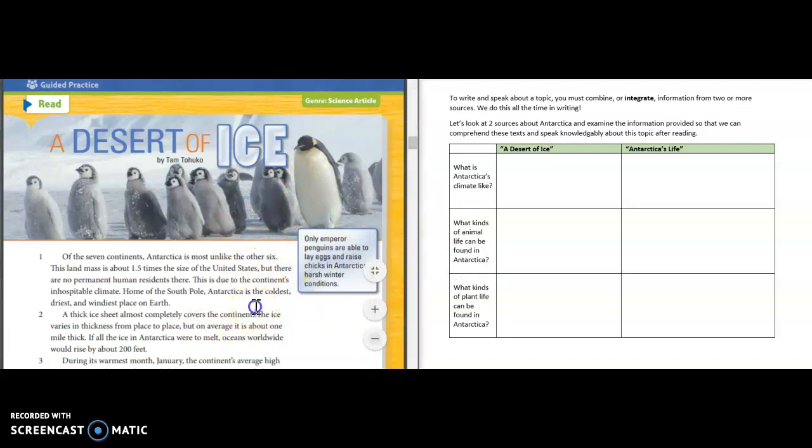So now I'm going to jump over here to the text and let's take a look. Right away I see a non-fiction text feature. I know that many of you are probably thinking, oh well that's a photograph and then that's a caption. So let's read that caption. It says, 'Only emperor penguins are able to lay their eggs and raise chicks in Antarctica's harsh winter conditions.' Well that kind of helps answer one of our questions from our graphic organizer, doesn't it? Right, they wanted to know what kind of animal life could be found.